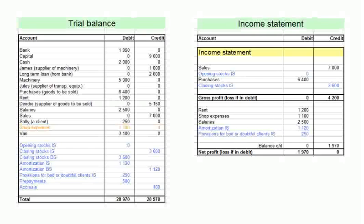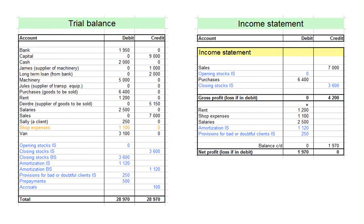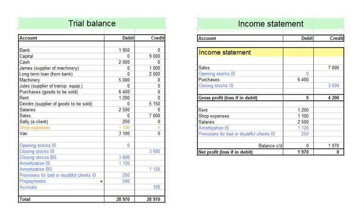To finish up this lesson and all the adjustments we study in this course, the trial balance now shows shop expenses back at 1,100, with an accruals account of 100 that compensates. The income statement shows the trading part unchanged; rent is unchanged; shop expenses is 1,100; salaries have not been adjusted; amortization is 1,120; and provisions for bad clients is 250. The last two adjustments — prepayments and accruals — are not new line items here but adjustments within shop expenses, and their corresponding accounts go into the balance sheet.